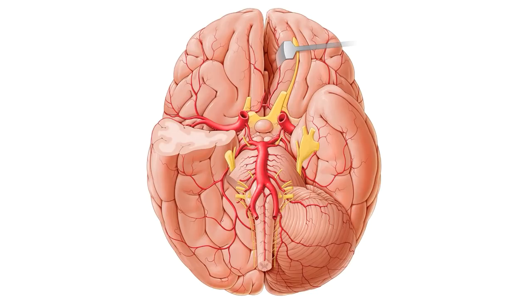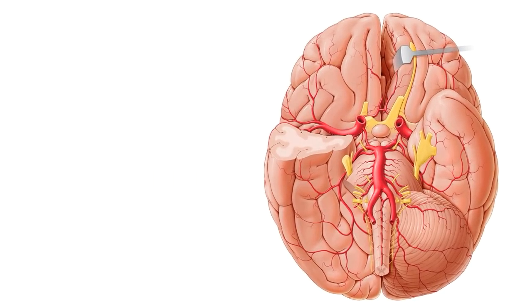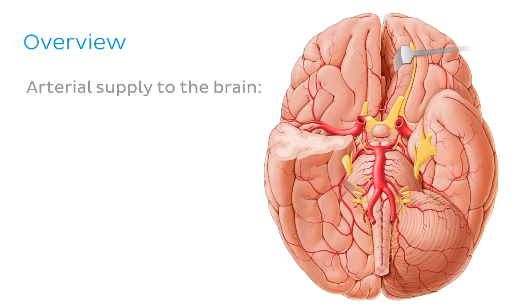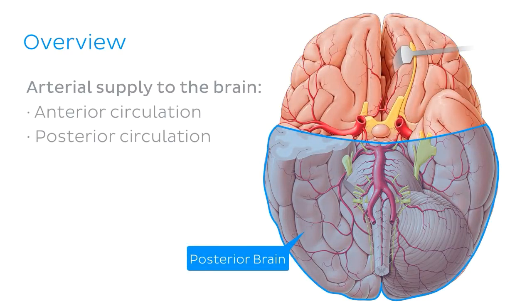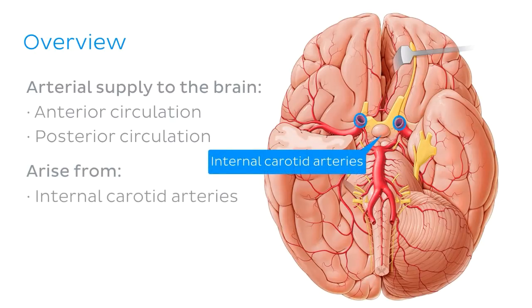Now that we're comfortable with the images that we'll feature throughout this video, let me give you a quick overview of what we'll discuss during this tutorial. Arterial blood supply to the brain is very important because it maintains brain function, which in turn governs all other bodily functions. The arterial supply to the brain can be divided into arteries responsible for anterior circulation and arteries responsible for posterior circulation. Arteries responsible for anterior circulation arise from the internal carotid arteries, and those responsible for posterior circulation arise from the vertebral arteries.